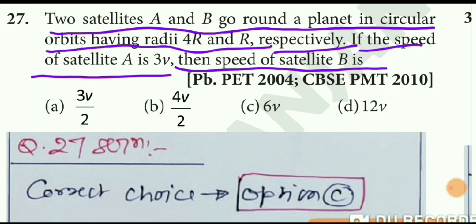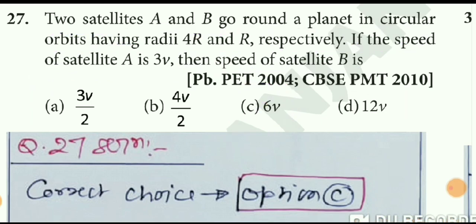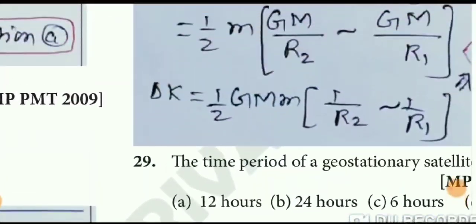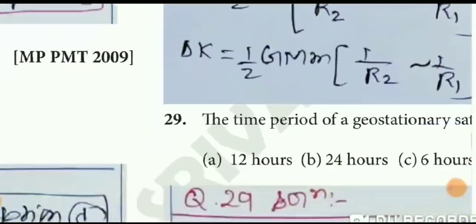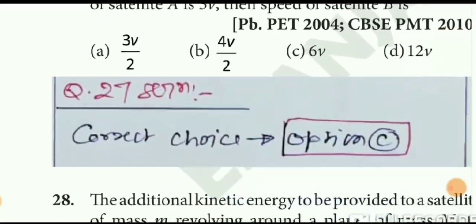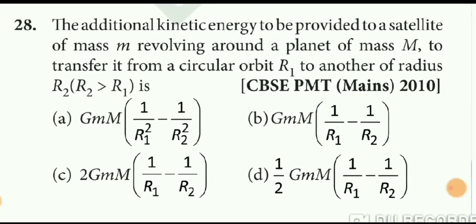Question number 27 is a similar question we did previously. Orbital velocity is inversely proportional to √r, so comparing the two satellites gives the answer. The correct option here is C.